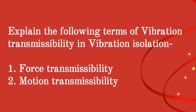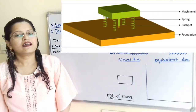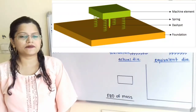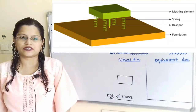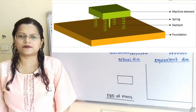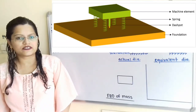Explain the following terms of vibration transmissibility in vibration isolation: first, force transmissibility; second, motion transmissibility. Let us understand the concept of vibration transmissibility in vibration isolation. There are two types: first, force transmissibility; second, motion transmissibility.